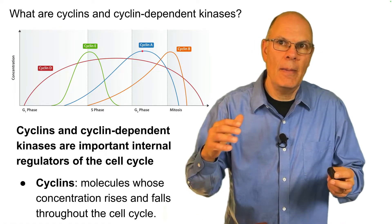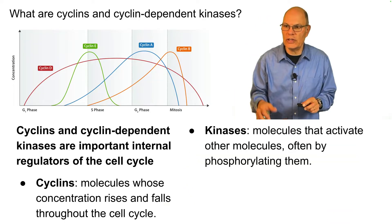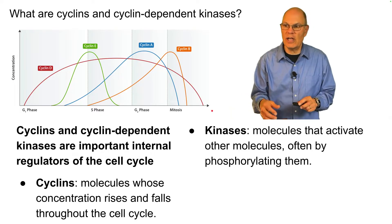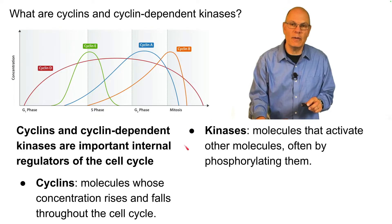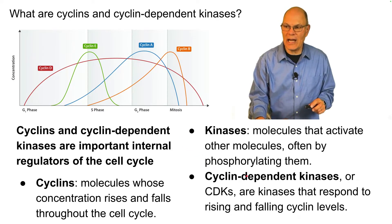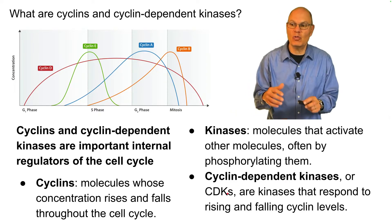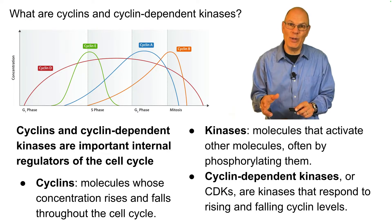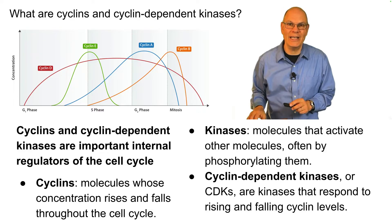Kinases, which we discussed previously in the context of cell communication, are molecules that activate other molecules, often by phosphorylating them. Cyclin-dependent kinases, or CDKs, are kinases that respond to rising and falling levels of cyclins. Now we're going to put that all together and see what some of the mechanisms are that regulate cell division.